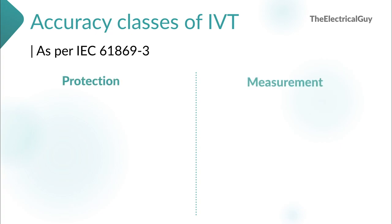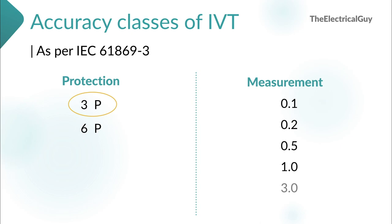IVT has two types of accuracy class: protection and metering. In protection, as per IEC 61869-3, there are two types: 3P and 6P. The number 3 or 6 indicates the percentage of voltage error allowed, and the letter P indicates protection. 3P is more accurate than 6P as the voltage error allowed is less, making it the most commonly used protection class in IVTs. In metering, we have classes 0.1, 0.2, 0.5, 1.0, and 3.0. Again, the number indicates the percentage of voltage error allowed. So if a secondary winding has class 0.2, only 0.2% error is allowed. The 0.2 class is the most commonly used class for measurement in voltage transformers.